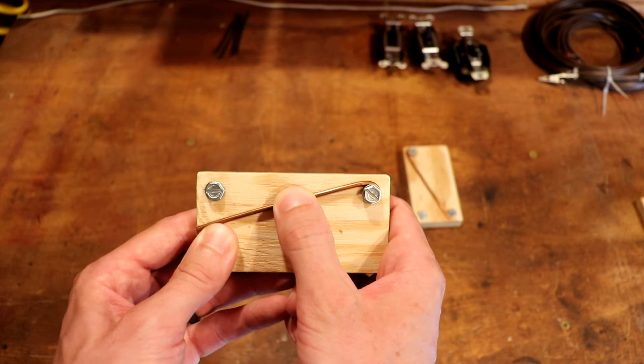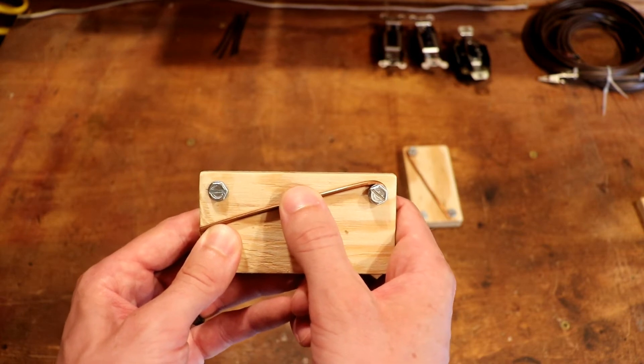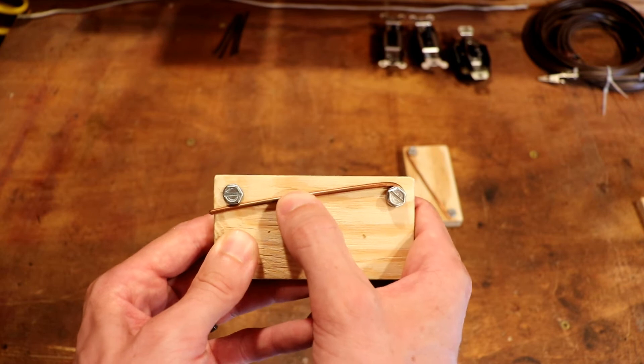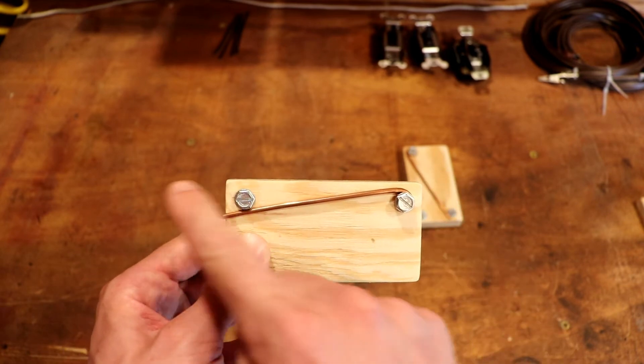When we turn the switch off, the circuit inside opens, breaking the circuit and turning the light off. We flip it the other way and electricity can flow straight through.